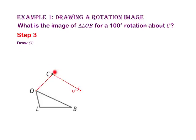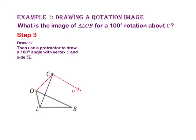For step 3, we will draw segment CL, then use a protractor to draw a 100 degree angle with vertex C and side CL.